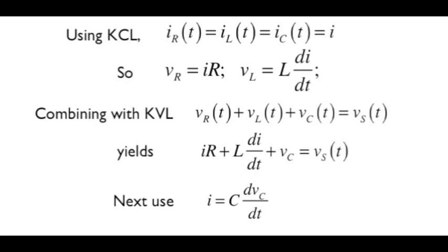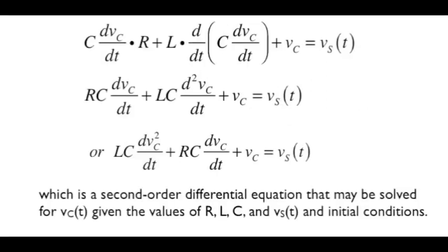For the next step, we haven't used yet the capacitor constraint, namely I equals C dVc/dt. So let's do that now. IR becomes C dVc/dt times R. L di/dt becomes L times the first derivative of C dVc/dt, and note that taking the derivative of the derivative yields a second-order derivative. When we collect terms, we arrive at a second-order differential equation that can be solved for the capacitor voltage if we have sufficient information about the circuit.